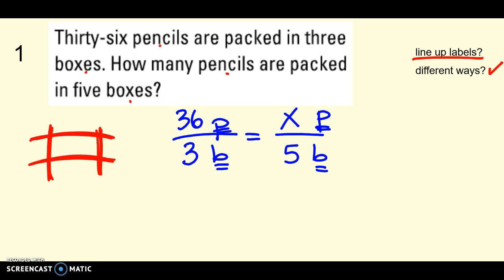Now, you can either use arrows, do it mentally in your head, or cross products. Looks like for me, this one's pretty simple. If I just want to multiply by 12, and multiply by 12, I would get my answer. Right? So, that would be five times 12. Sixty pencils would be in five boxes. Okay? So, the key here, line up your labels, and then pick one of the strategies to find the variable, the one that's missing.